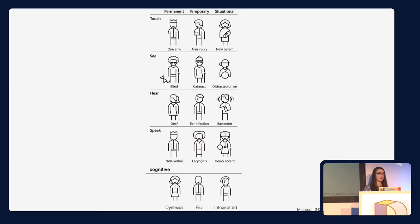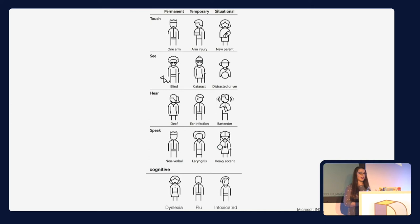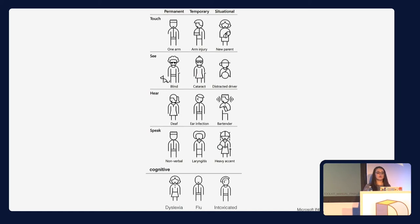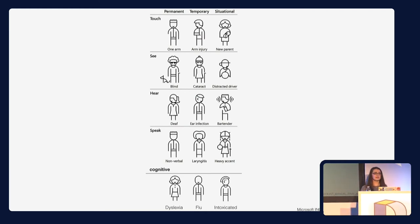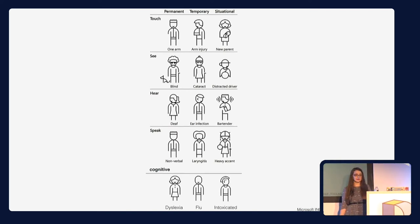So we're going to be looking at these groups of people and the things we do as developers that have negative impacts on their experience. But more importantly, we're going to be looking at the small, simple things that we can do as designers and developers to improve their experience and make the web a more accessible place for everybody.